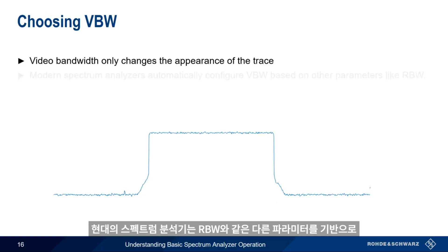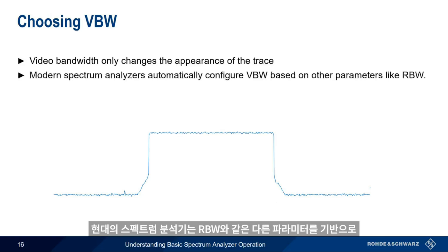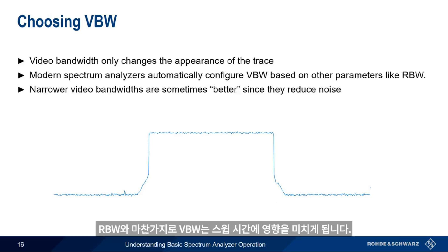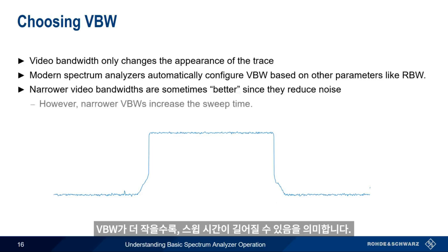So how do we choose our video bandwidth? Video bandwidth only changes what the trace looks like, so to a certain extent the correct setting depends on the application. Most modern spectrum analyzers will automatically configure and update video bandwidth based on other parameters like resolution bandwidth. A smaller or narrower video bandwidth might seem desirable since it reduces noise on the trace, but just like resolution bandwidth, video bandwidth does affect sweep time — the smaller the video bandwidth, the longer the sweep time.